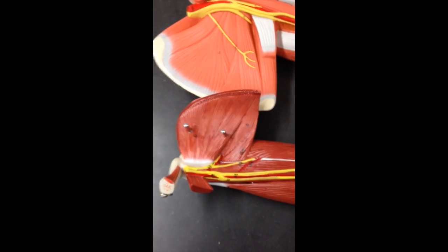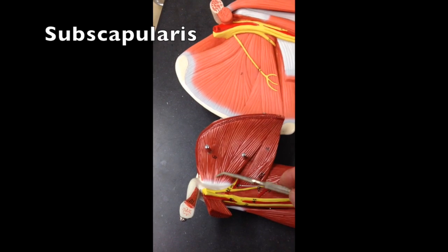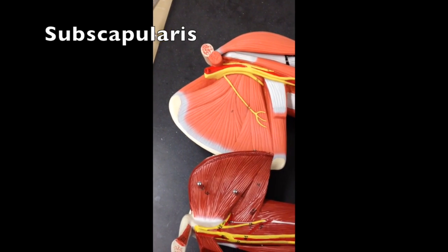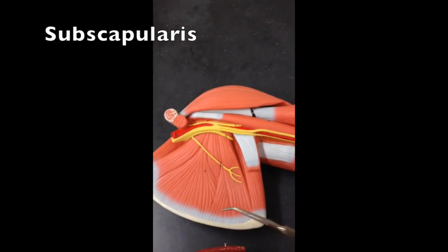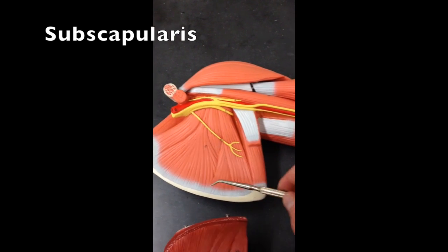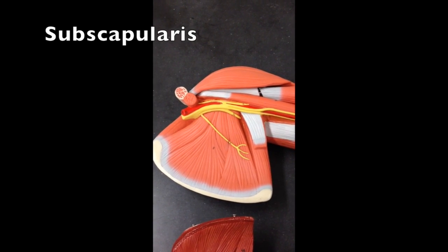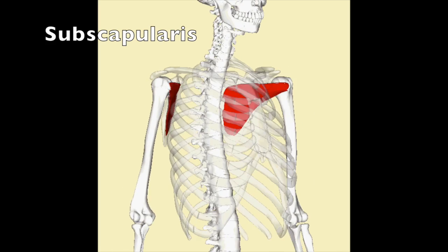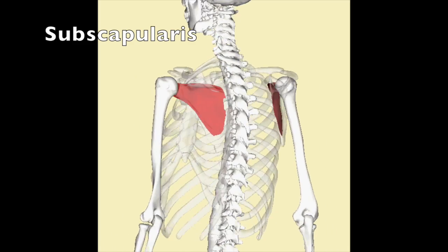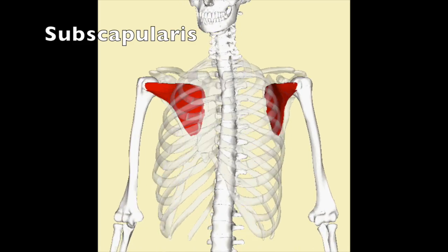On the anterior side of the scapula lies the subscapularis, shown with the arm removed from our torso model as well as our arm model. The origin of this muscle is the anterior surface of the scapula, and the insertion is on the lesser tubercle of the humerus, shown here. Its action is to rotate the arm medially.